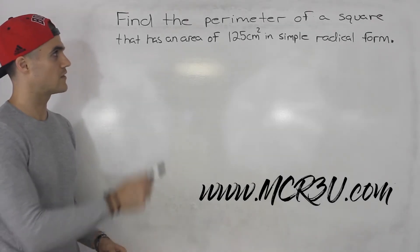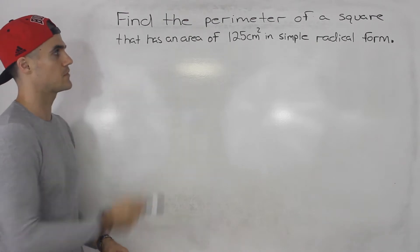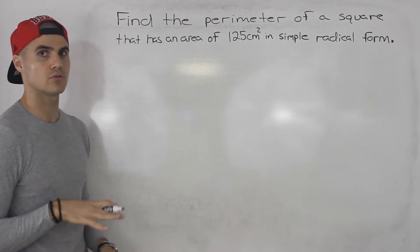Moving on to another word problem. We have to find the perimeter of a square that has an area of 125 centimeters squared in simple radical form.